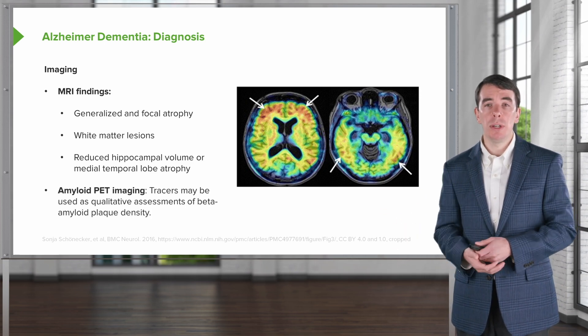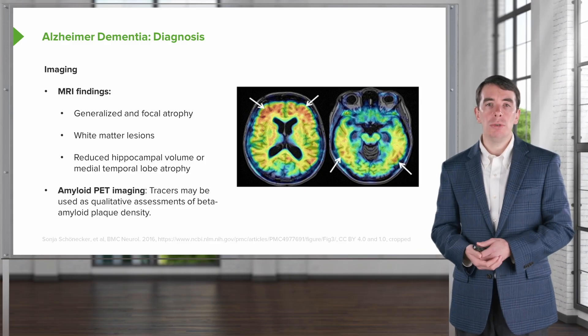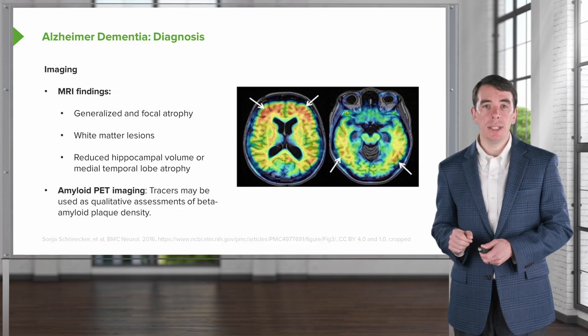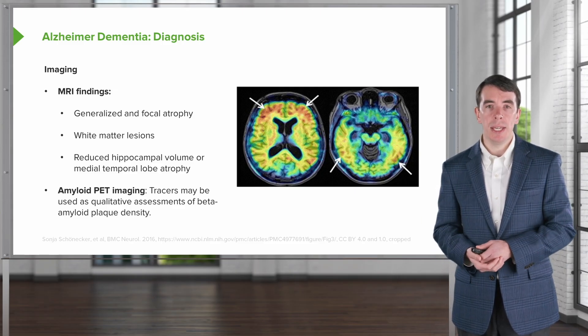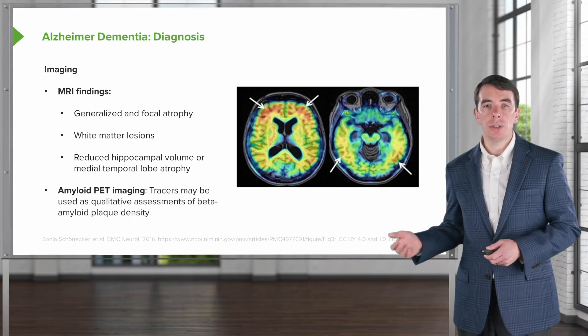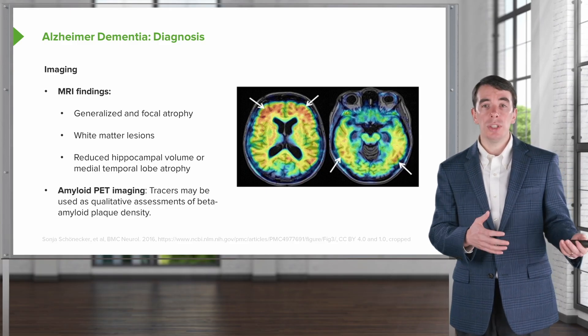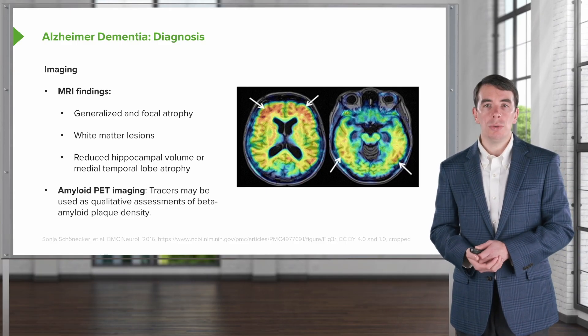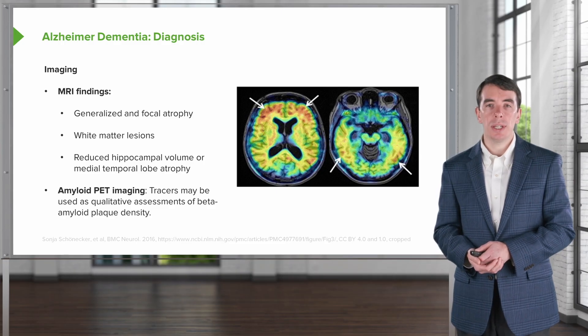Increasingly, we see the use of beta amyloid PET imaging as well as other advanced nuclear imaging techniques. This uses a tracer that binds to beta amyloid and lights up areas of deposition. We use a qualitative assessment of beta amyloid plaque density. The red areas visible in the images are areas of beta amyloid deposition seen in the frontal lobes as well as the posterior temporal and parietal lobes — areas typically affected in Alzheimer's dementia — and this can be suggestive of early pathology in patients with mild cognitive impairment or more advanced cognitive dysfunction.